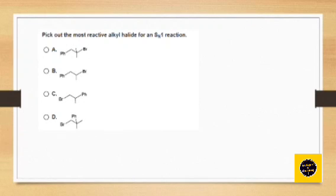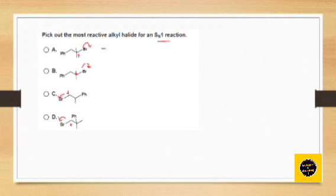Question 3 is again an SN1 problem. After removal of bromine, we check which carbon forms the more stable carbocation. One option forms a tertiary carbocation, another a secondary, and two others form primary carbocations. Do not get confused by similar-looking compounds — just check where the bromine atom is. The carbocation forms at the specific carbon from which bromine is removed. Since a tertiary carbocation is most stable, the compound forming the 3° carbocation is the most reactive toward SN1.